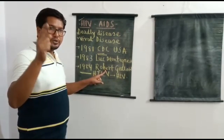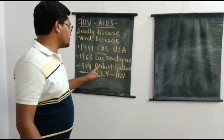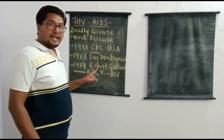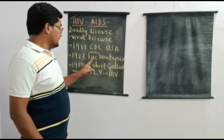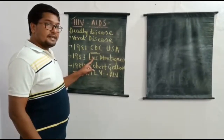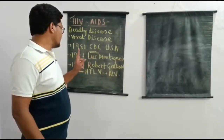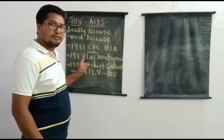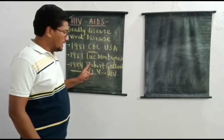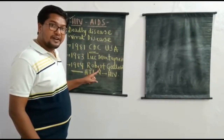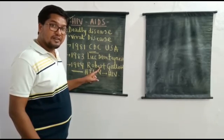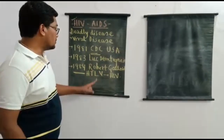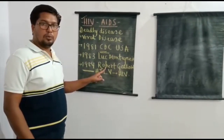Today we call it HIV, and this credit goes to Robert Gallo. Students should remember two names related to the discovery of HIV: Leutmantanir, who isolated the causative virus from the blood of the patient for the first time, and Robert Gallo, who identified this virus as HIV. It is an RNA virus.